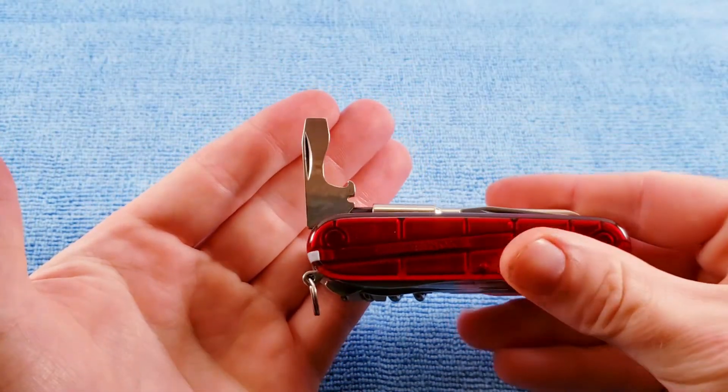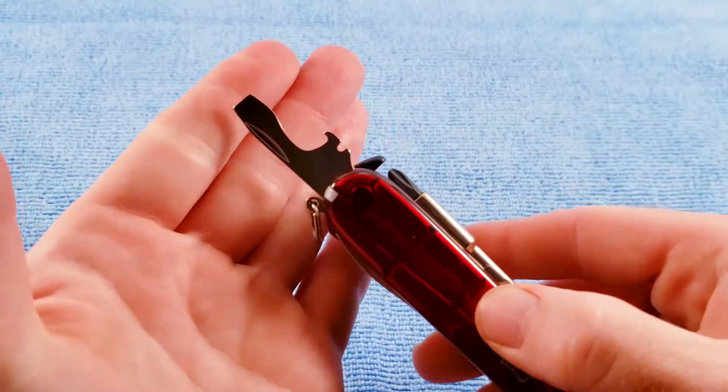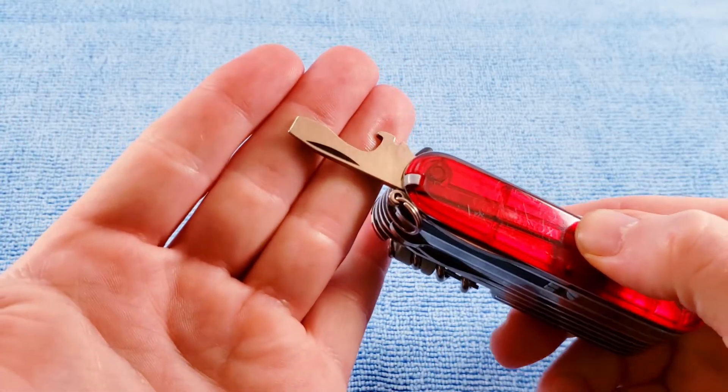The cap lifter with the 1985 90 degree style. Wire bender, wire stripper, and hollow ground screwdriver.